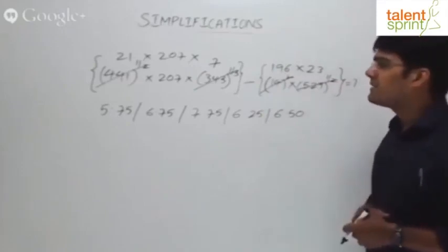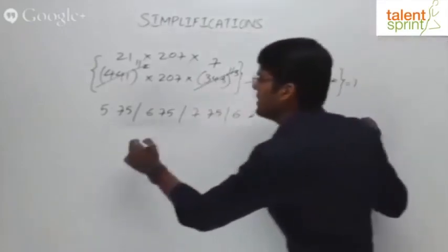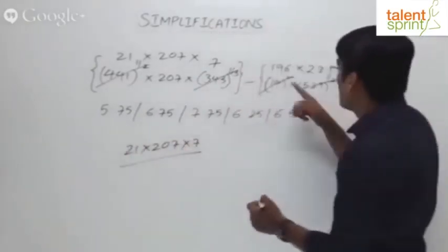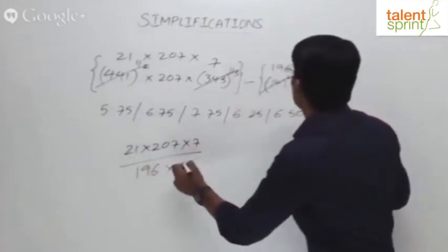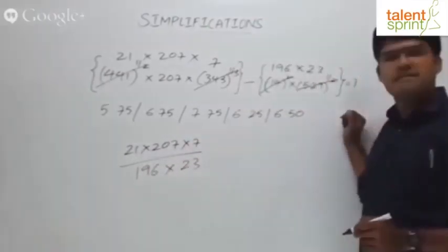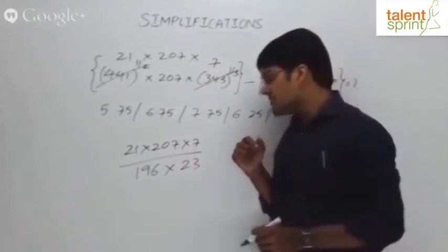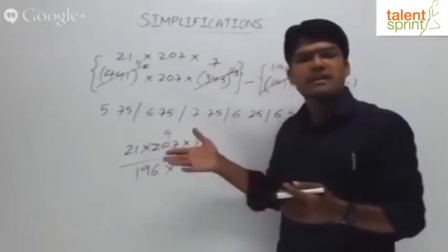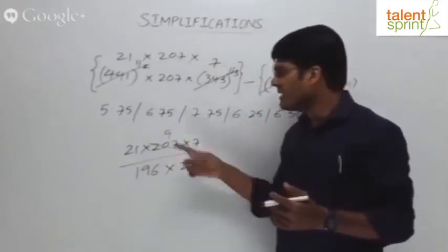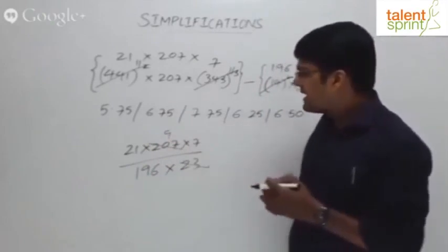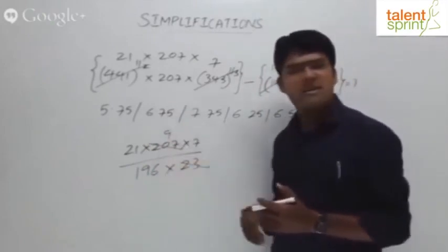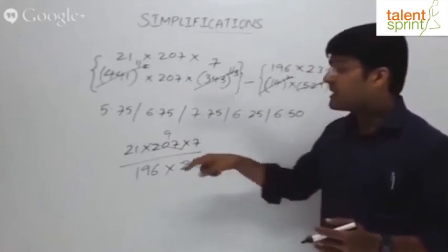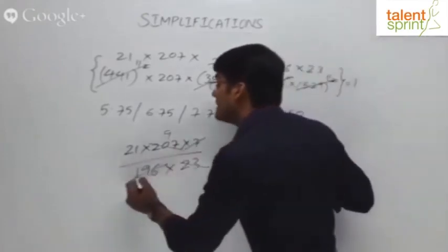Now try to simplify this. What do you see if you look at it? 21 into 207 into 7 divided by 196 into 23. You would know that 23 goes 9 times into 207. 23 into 10 is 230 minus 23 is 207. 9 times. What else can be done? 7 goes how many times in 196? 28 times.